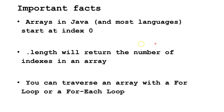Some important facts to know. Arrays in Java and most languages start at index 0. So an array of size 5 will have indexes 0, 1, 2, 3, and 4. Dot length will return the number of indexes in an array. And you can traverse an array with a for loop or a for-each loop. We'll learn how to do both.